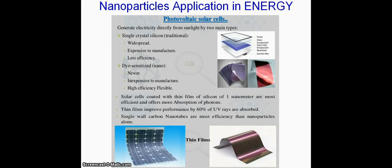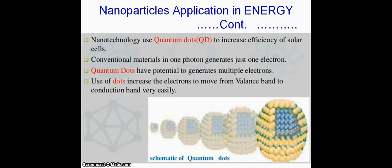If we use nano-sized crystal silicon cells, they are newer, dye-sensitized, inexpensive to manufacture, have very high efficiency, and are very flexible. Solar cells coated with thin films of silicon of 1 nanometer are most efficient and offer more absorption of photons. Thin films improve performance by 60%, UV rays are absorbed. Single-walled CNTs are most efficient than nanoparticles alone.